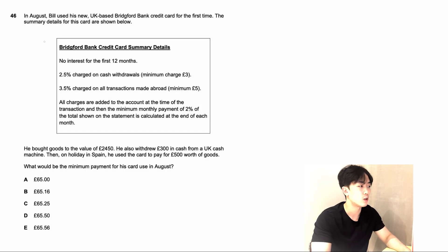Moving on to question number 46. In August, Bill used his new UK-based bank credit card for the first time. They've got a summary of the bank details or the charges the bank takes. There's no interest in the first 12 months, 2.5% charged on cash withdrawals, 3.5% charged on transactions made abroad. All charges are added to the account at the time of the transaction and then a minimum monthly payment of 2% is calculated at the end of each month. He bought goods of value £2,450. He also withdrew £300 in cash from a UK cash machine. And on holiday, he used the card to pay £500 worth of goods. What would be the minimum payment for his card use in August?